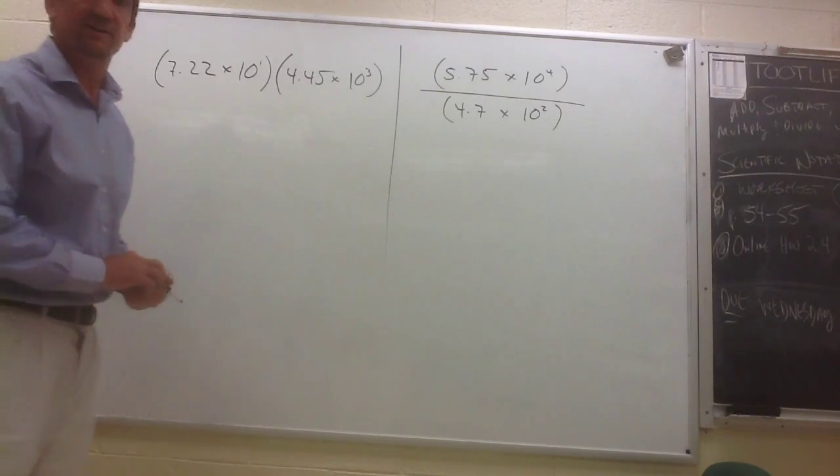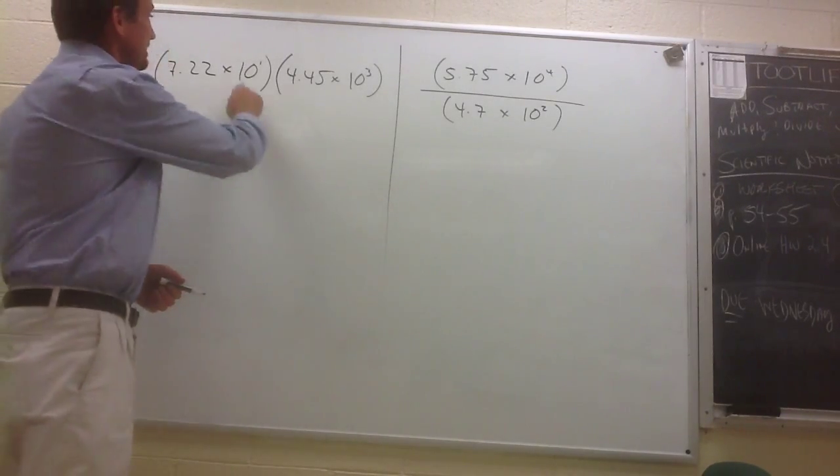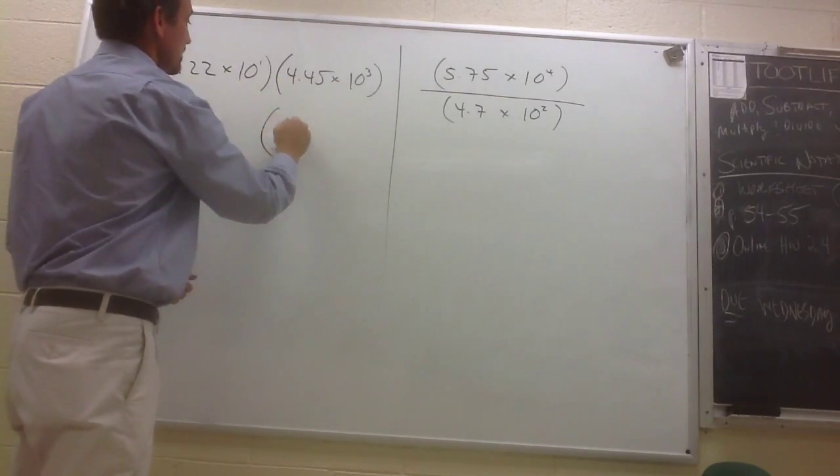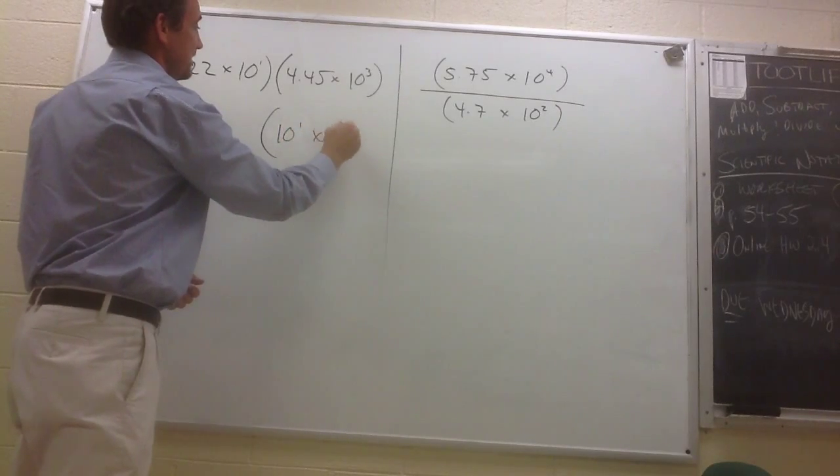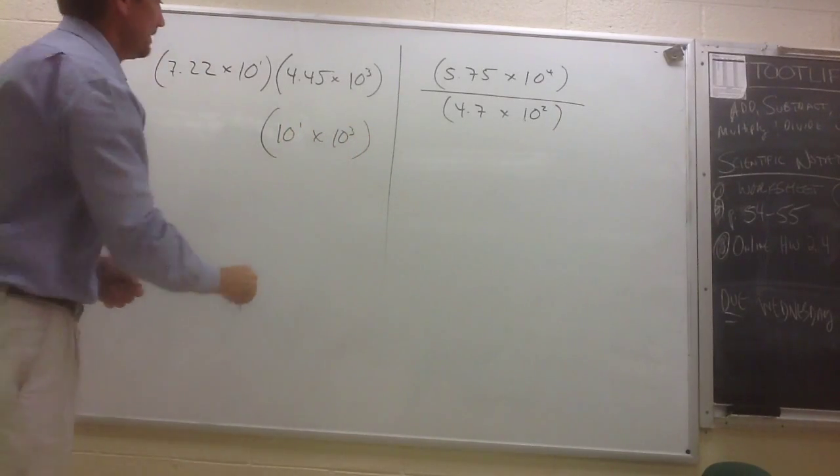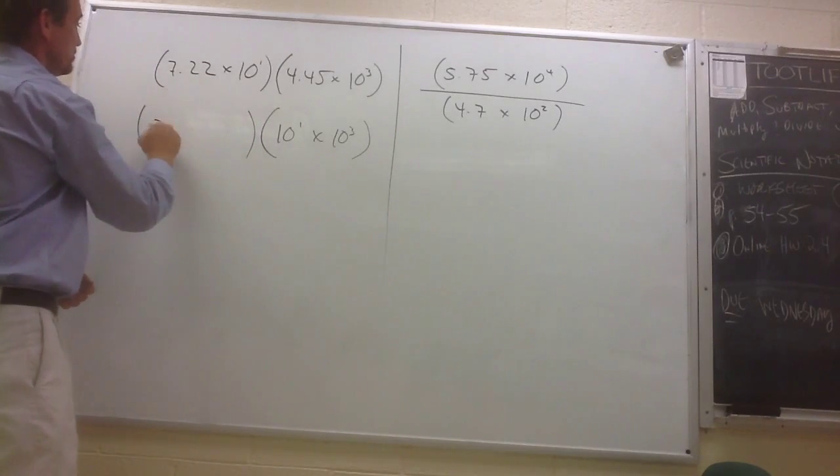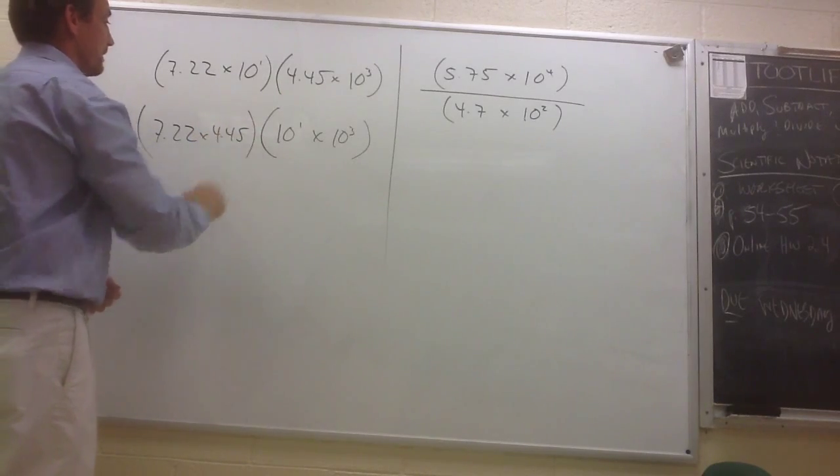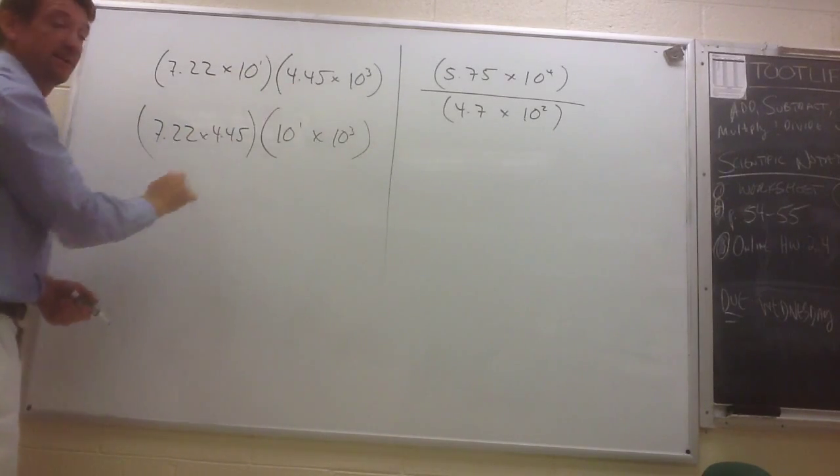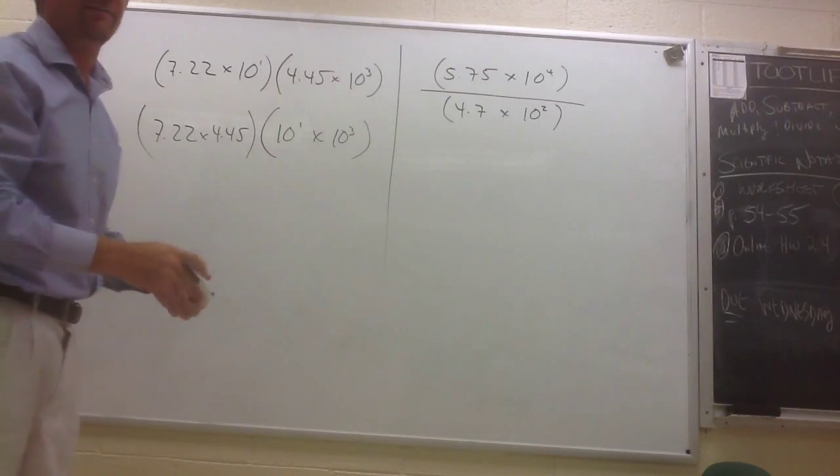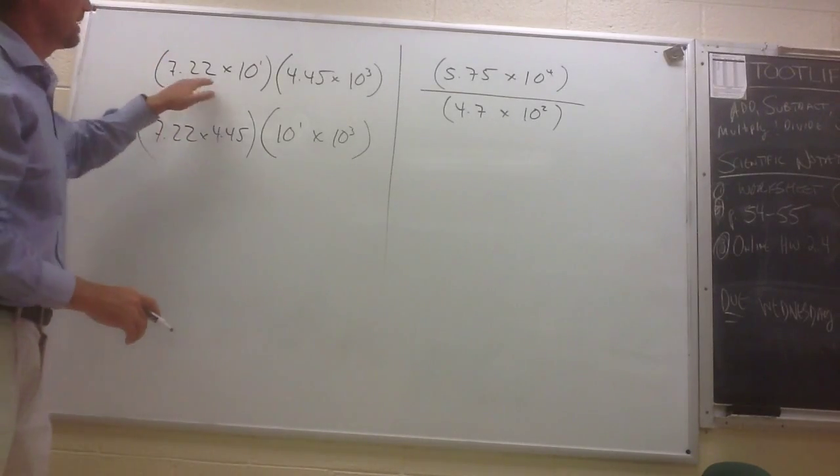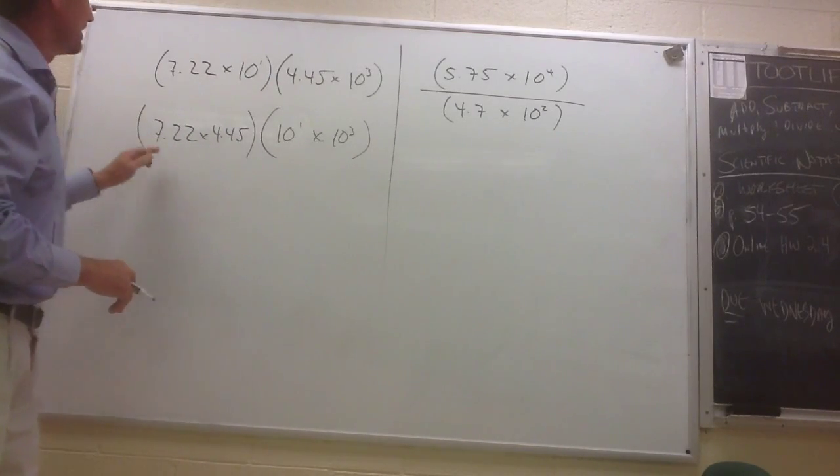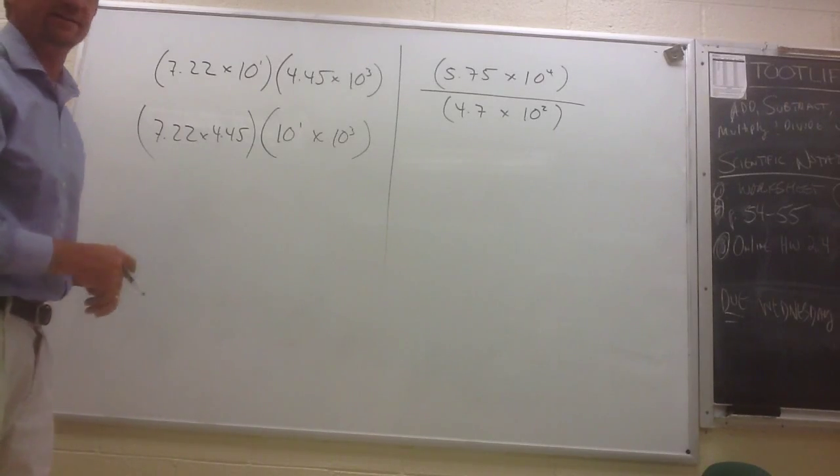So we can use the properties of exponents that we learned last week to multiply our 10 to the 1st and our 10 to the 3rd together. So let's rewrite these so that we have the 10 to the 1st and the 10 to the 3rd together, and then we'll put these other terms, the 7.22 and the 4.45 together. And again, the reason we can rewrite this is because of our commutative and associative properties of multiplication. It doesn't matter how we group the terms, it doesn't matter what order we place the terms in. As long as we're multiplying all of them, we're going to get the same result.